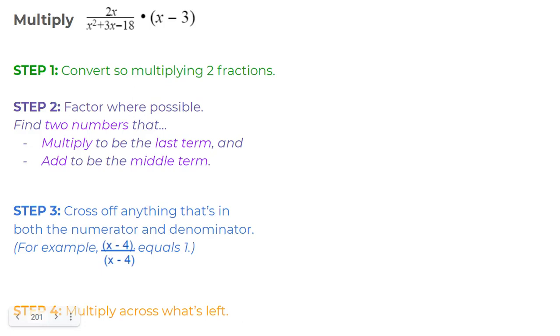Here we're asked to multiply these rational expressions. So when you are given one rational expression, one fraction, and you're multiplying by something else, you want to make sure that something else is also a rational expression, is also a fraction.